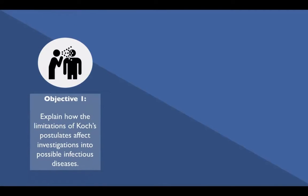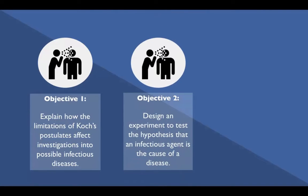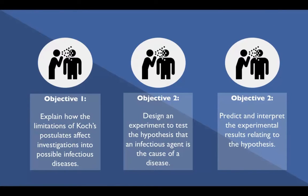At the end of the lesson, the students should be able to explain how the limitations of Koch's postulates affect investigations into possible infectious diseases, design an experiment to test the hypothesis that an infectious agent is the cause of a disease, and predict and interpret the experimental results relating to the hypothesis.